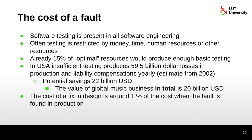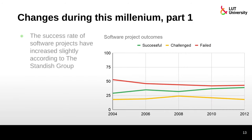Remember that the cost of a fix in design is around 1% of the cost when the fault is found in production. According to the Standish Group, the success rate of software projects has increased slightly during this millennium — but still less than 50% of software projects are successful. Projects classified as 'challenged' have some problems, and 'failed' projects were ended before going into production. It's a bit better now than in the 90s.